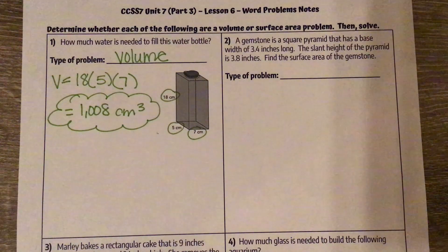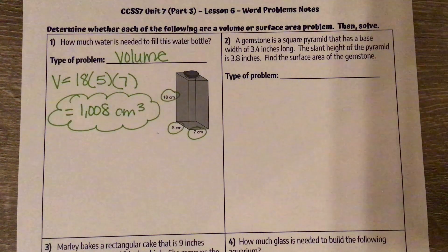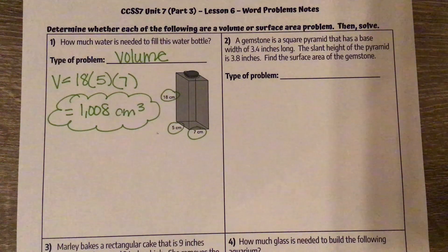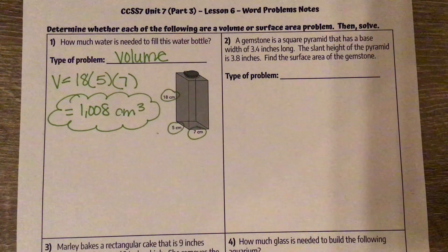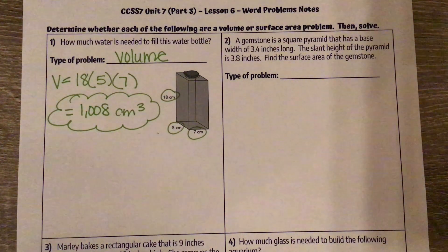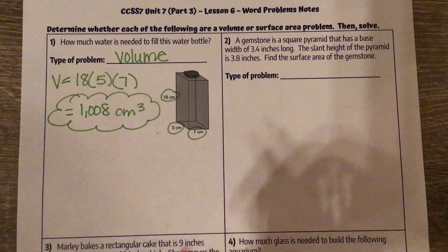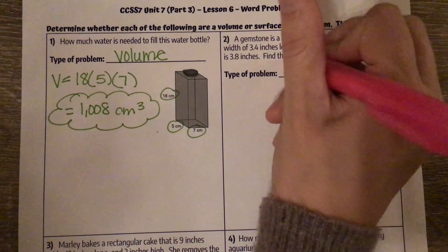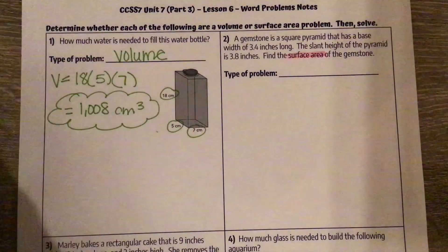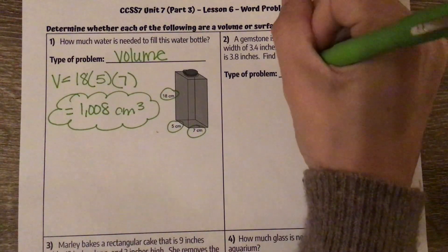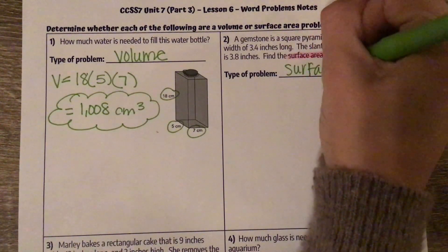Number two: a gemstone is a square pyramid that has a base width of 3.4 inches. The slant height of the pyramid is 3.8 inches. Find the surface area. Well, it specifically says find the surface area, so we know this is a surface area problem.